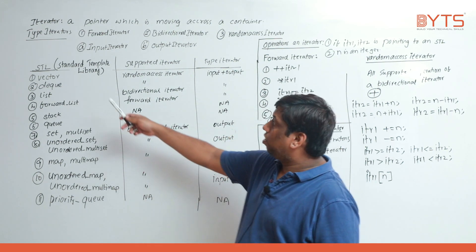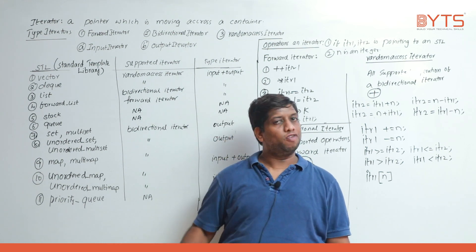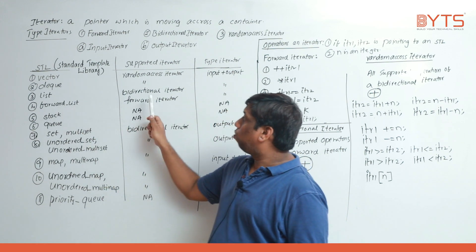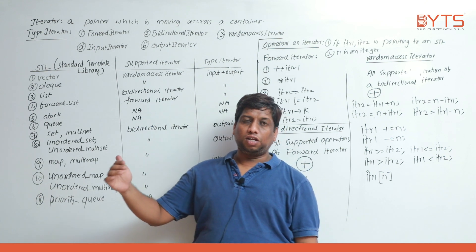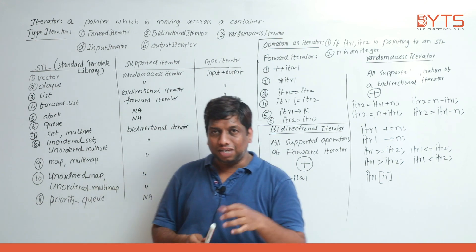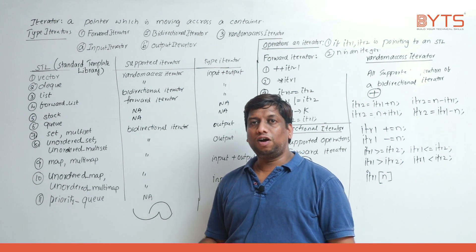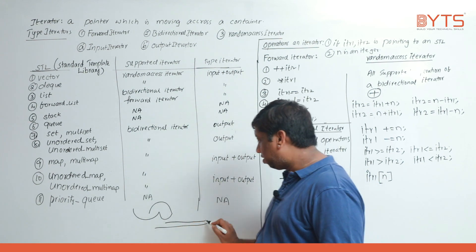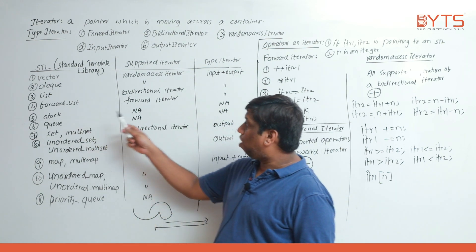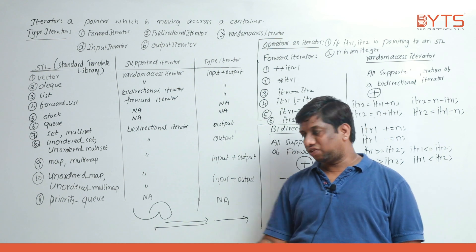Vector supports random access iterator — the iterator can move from anywhere to anywhere. Deque also supports random access iterator. List supports bi-directional iterator, which cannot move from anywhere to anywhere but can move forward and backward sequentially. Random access means you can jump directly to any location; bi-directional means you move sequentially either forward or backward. Forward list supports forward iterator only.